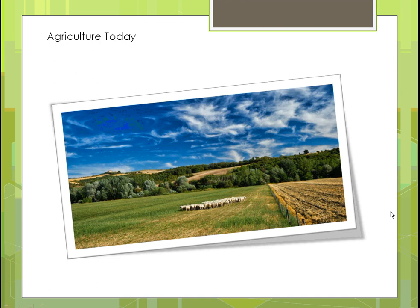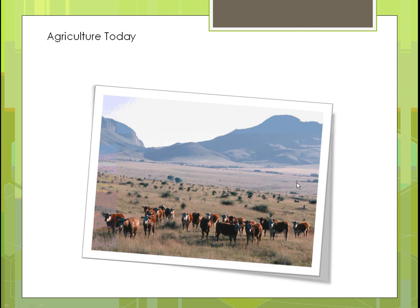Here's a picture of how our agriculture looks — sheep out in the field eating grasses, separated from what looks like an old corn field. And here's a picture of cattle out on the range close to the mountains, likely out west, grazing and eating the grasses that are there.